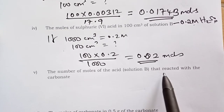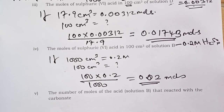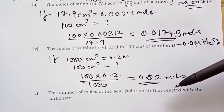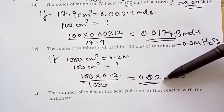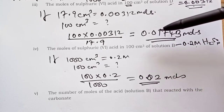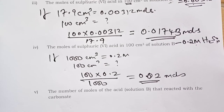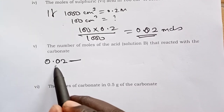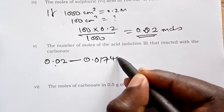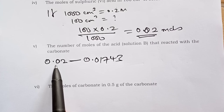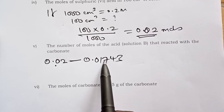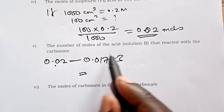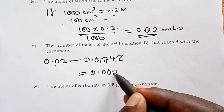To find moles of sulfuric acid that reacted with the carbonate: we started with 0.02 moles in 100 cm³ of solution B, and after reacting with the carbonate, 0.01743 moles remained in solution D. Subtracting: 0.02 − 0.01743 = 0.00257 moles of sulfuric acid reacted with the carbonate.